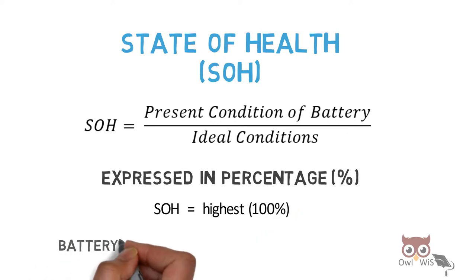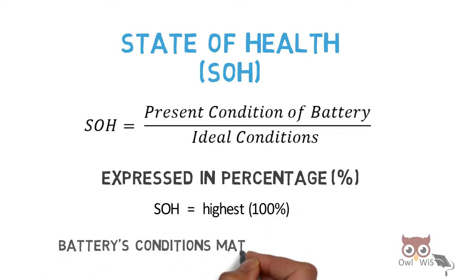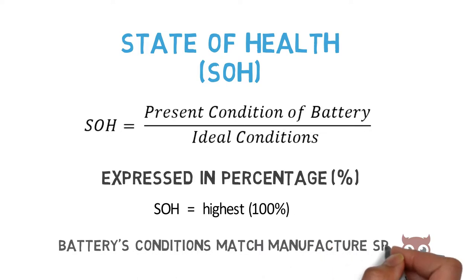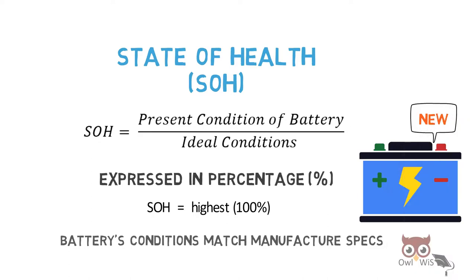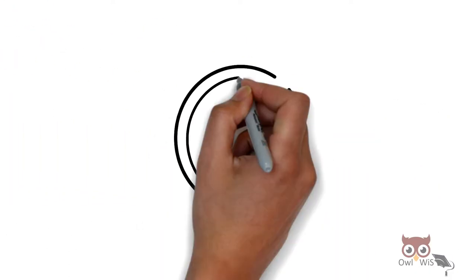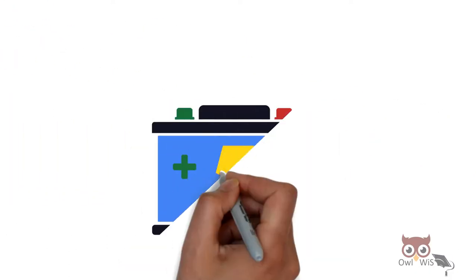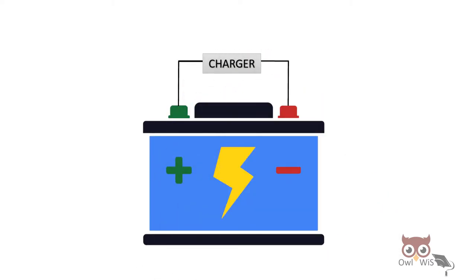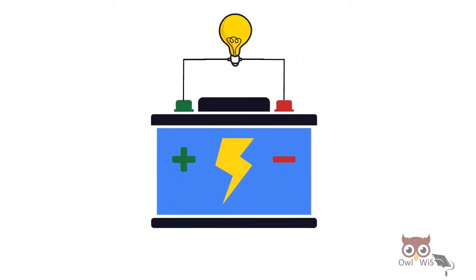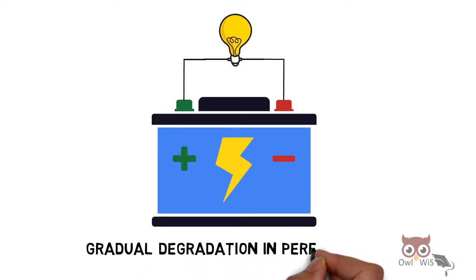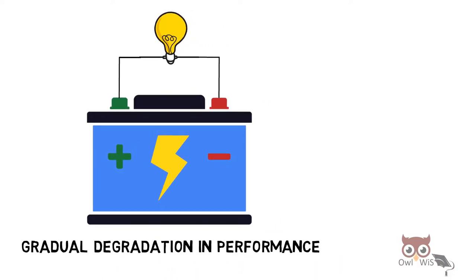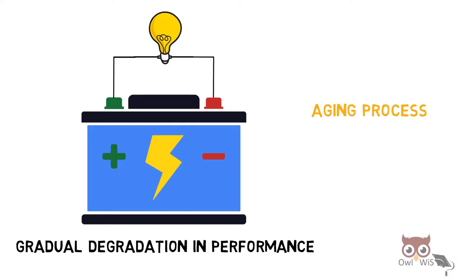SOH is considered to be at its highest — 100% — when the battery's conditions match the manufacturer's specifications, that is, when the battery is completely new. But over time, the battery undergoes a number of charge as well as discharge cycles, resulting in gradual degradation in performance.